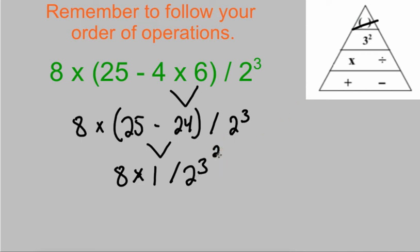2 to the third power means 3 2s multiplied together. 2 times 2 is 4 times 2 is 8. And then I'm ready for multiplying and dividing.